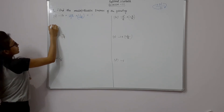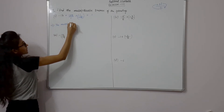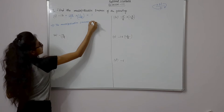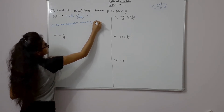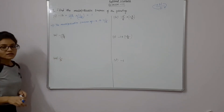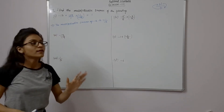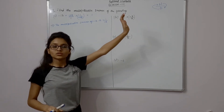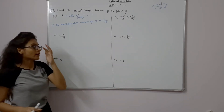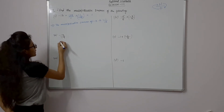When we cancel both of these, the answer will be 1. So as a concluding line: the multiplicative inverse of minus 13 is minus 1 upon 13. The reciprocal of a number is its multiplicative inverse. The numerator becomes the denominator and the denominator becomes the numerator.